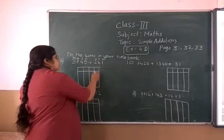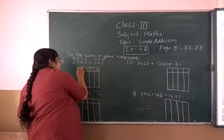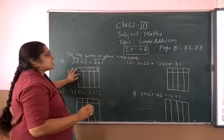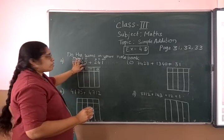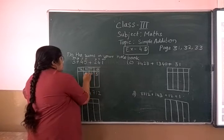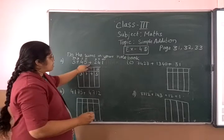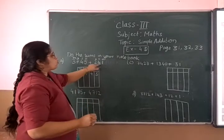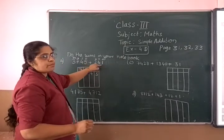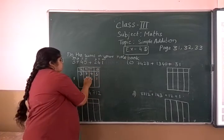So how to write? 1, 10, 100 and 1,000. First number is 3,745. Don't start from here — start from 1s space. Write 5 here. 5, 4, 3 — like this you have to write the number. Put plus sign. And this one is 241. You have to write the number right from the 1s place. 241 — so 1 should go in the 1s place, 4, and this is 2.